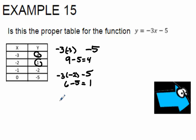So now we have negative 3 times negative 1. I take out the x-coordinate. I put in negative 1. I'm going to subtract 5, and that ends up being 3 minus 5. That is negative 2. So so far, every x-coordinate is giving us the proper y-coordinate.